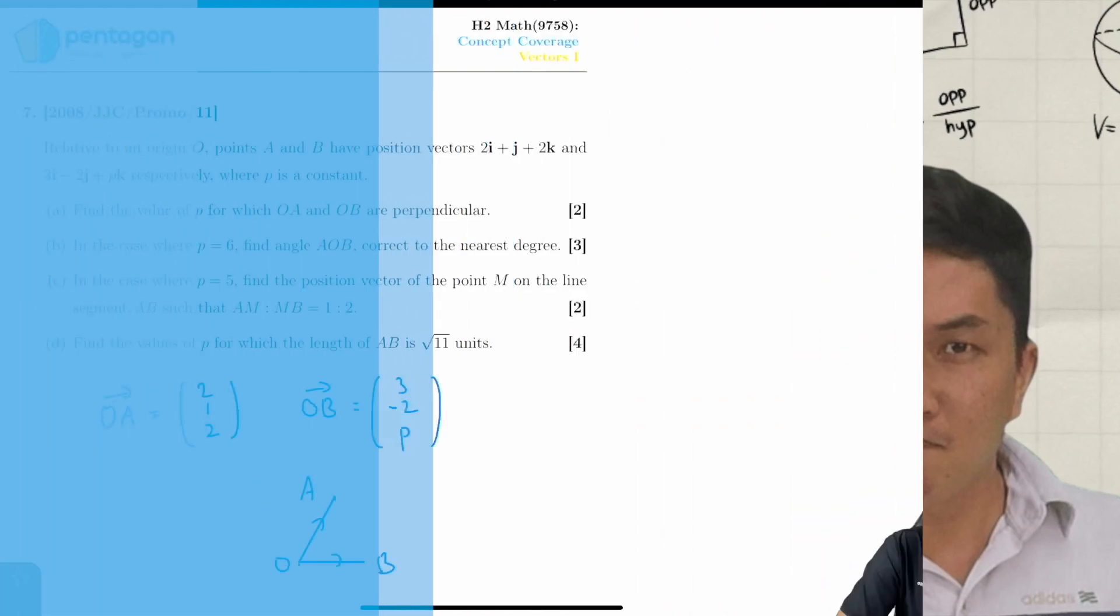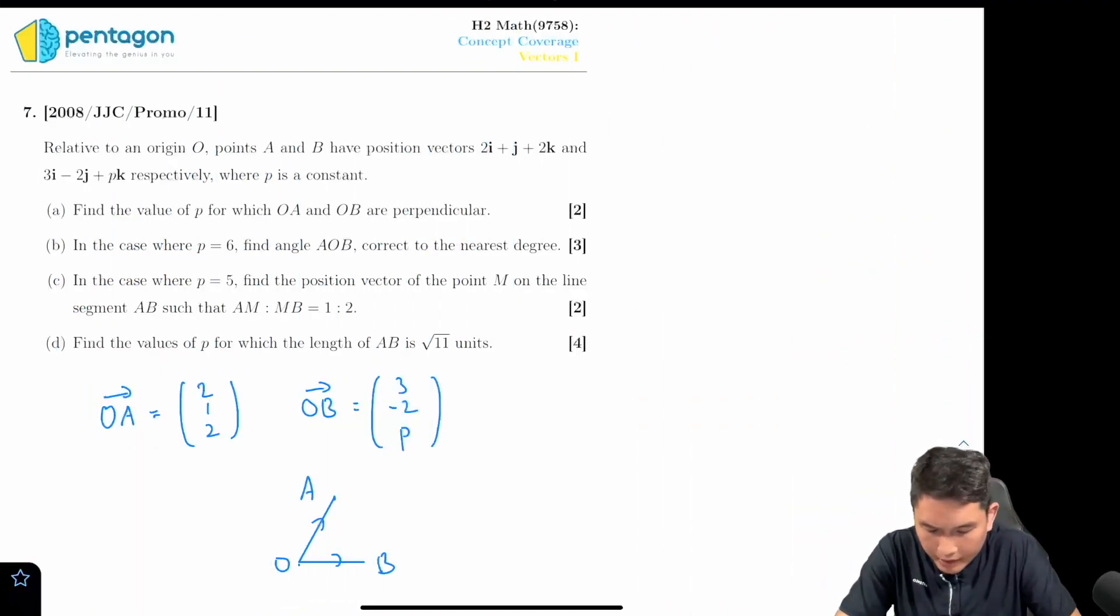Welcome back to part b. In part b we have to find the angle AOB. So angle AOB is the angle between the vectors OA and OB for the case of p equals to six.